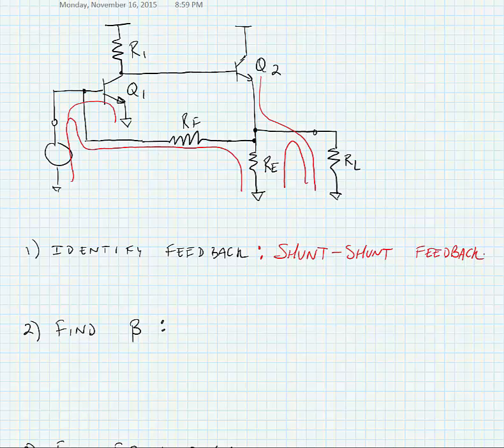Now shunt-shunt feedback is current at the input, voltage at the output, or a trans-resistance amplifier.